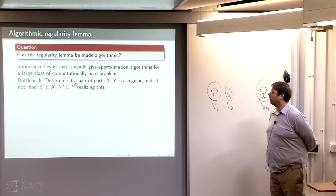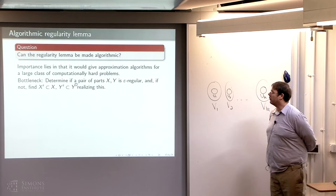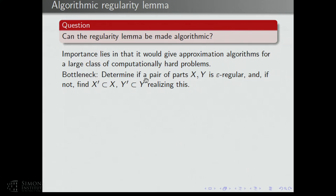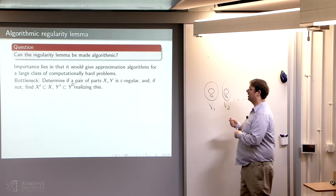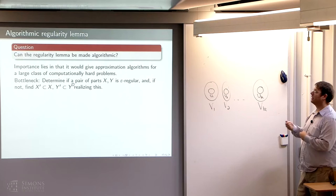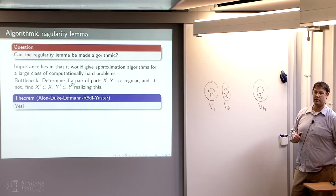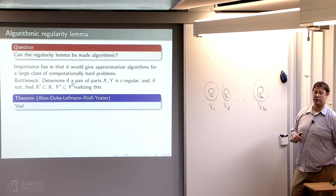The problematic part is: when you have a pair of parts x and y, you'd like to determine if it's epsilon regular or not. If it's not epsilon regular, you want a pair of subsets which realize this — finding x-prime subset of x and y-prime subset of y that show it's not epsilon regular. As stated, this is NP-hard for a particular epsilon. But if you're allowed to change epsilon — if it's not epsilon regular, find a pair showing it's not epsilon-prime regular for epsilon-prime depending on epsilon — then there's hope. You can in fact make the regularity lemma algorithmic.